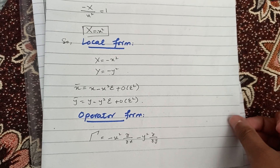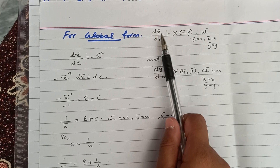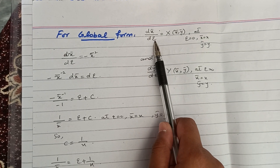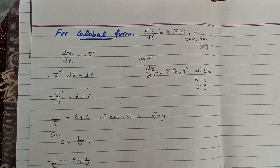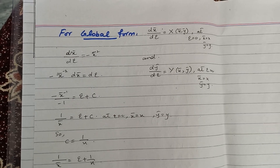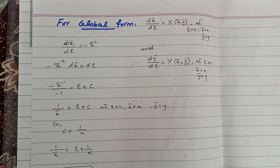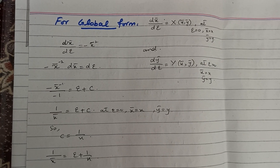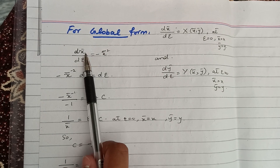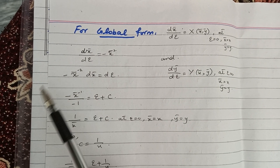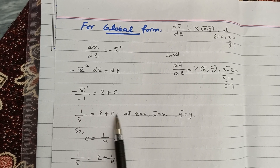To find the global form of the Lie group, we use dx̄/dε = X(x̄, ȳ) at ε=0 with x̄=x, and dȳ/dε = Y(x̄, ȳ) at ε=0 with ȳ=y. Using the value of X(x̄, ȳ) and converting the equation into a separable one, we get 1/x̄ = ε + c.